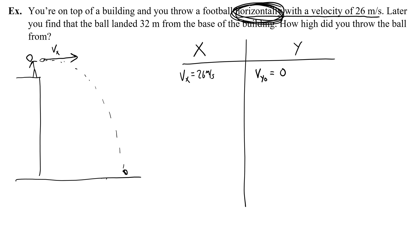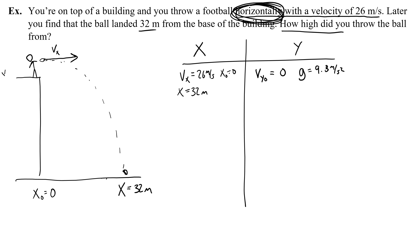Now let's deal with the 32 meters — 32 from the base of the building. I'll set my initial position x_0 equals 0 and my final position x equals 32 meters, in my x column. On the y side, I'll use 9.8 meters per second squared for the acceleration due to gravity. I want to figure out how high the ball was thrown from, so I'll call that y_0 with a question mark, and the final height when the ball reaches the ground is 0.